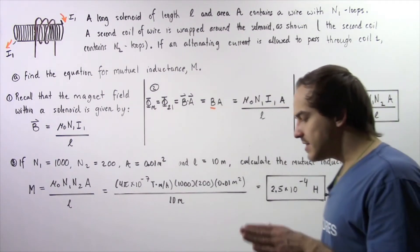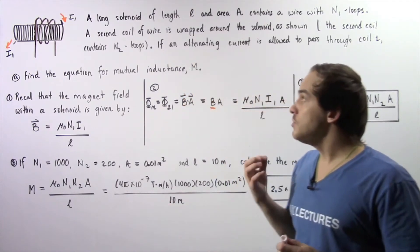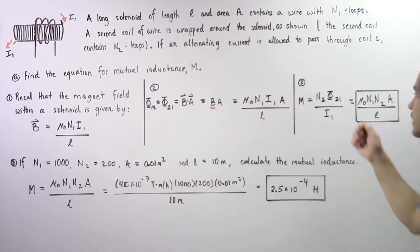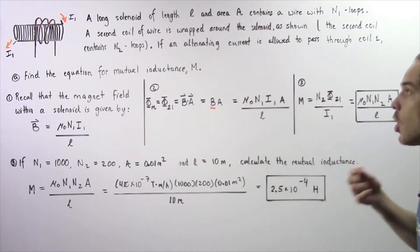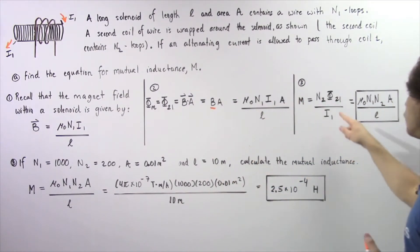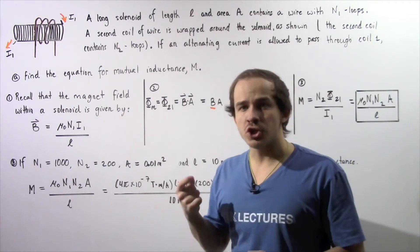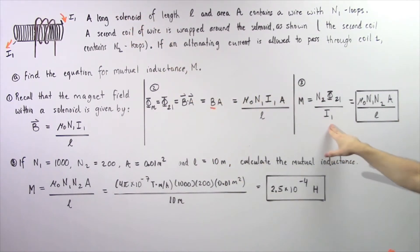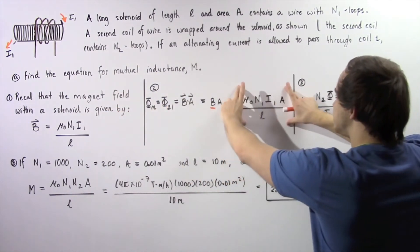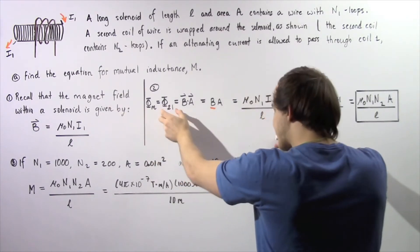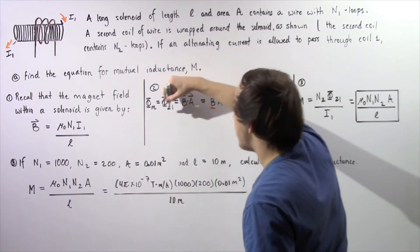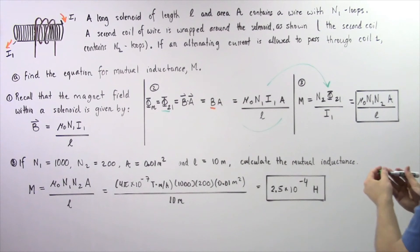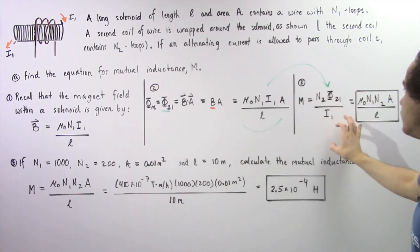Now let's move on to step 3. Recall from the previous lecture that the mutual inductance M of coil 2 as a result of coil 1 equals the product of the number of loops N2 and the magnetic flux through coil 2, divided by the electric current I1 that produces the changing magnetic flux through coil 1, the solenoid. We obtained the magnetic flux equation in step 2, so we replace that quantity in the mutual inductance formula by plugging it in.